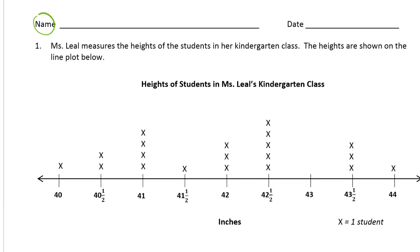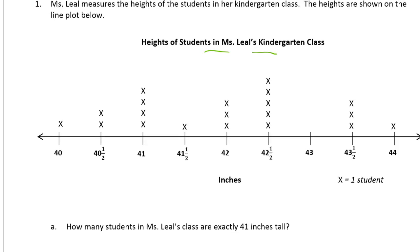Ms. Leal measures the heights of the students in her kindergarten class. The heights are shown on the line plot below. The title is 'Heights of Students in Ms. Leal's Kindergarten Class.' The bottom axis shows inches, and each X represents one student.